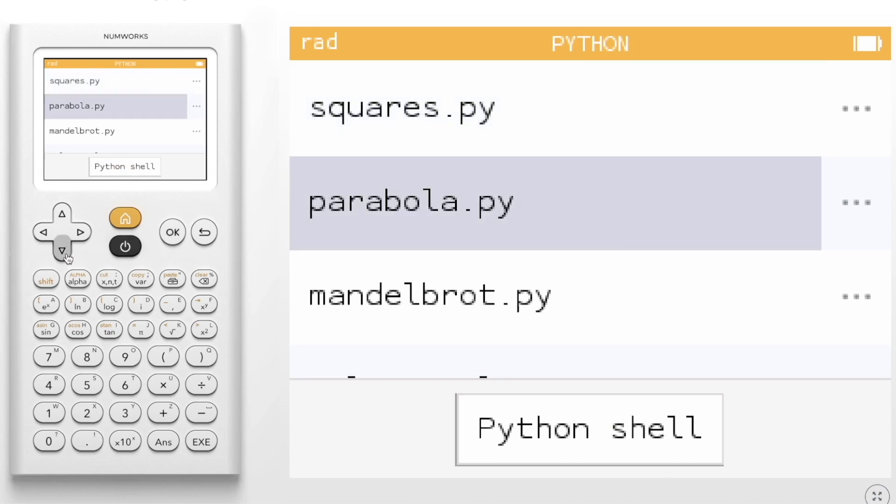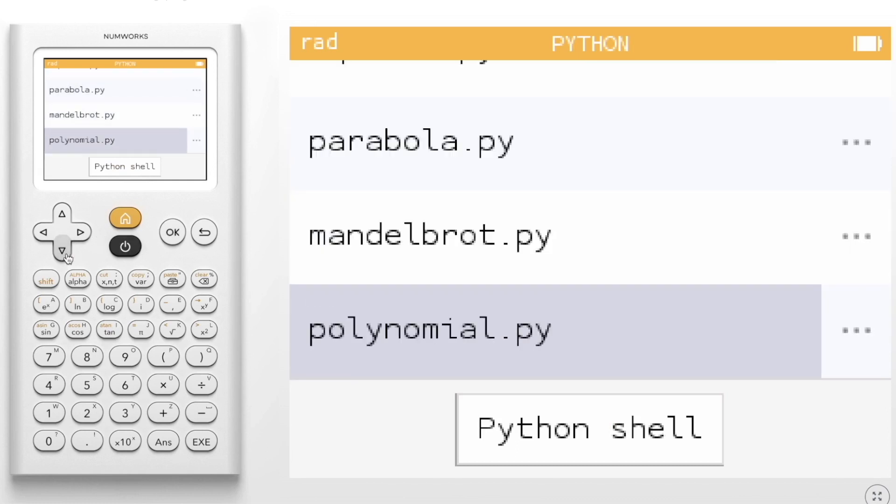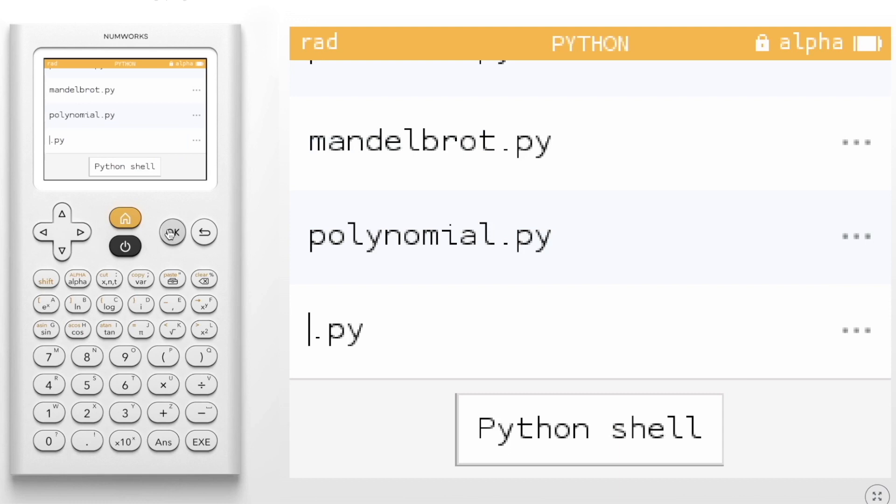We navigate down to the bottom of our saved scripts and select Add a Script. We must first give the script a name. For this example, I'll name the script Test.